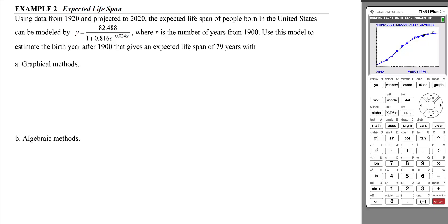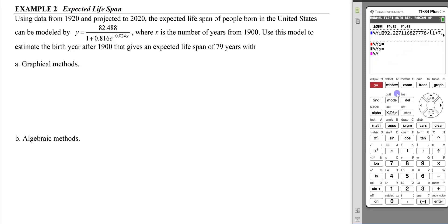Let's start by putting the model into the calculator. Go to y equals, turn our plots off from the previous data. Use the fraction template to put this together: 82.488 over 1 + 0.816 times e^(-0.024x). Make sure we don't have any typos before we move on.